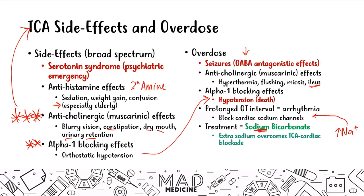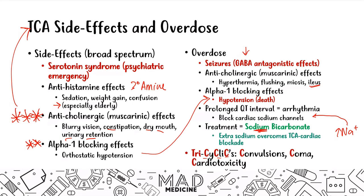An easy way to remember the TCA overdose presentation is with the three C's from the word 'tricyclic.' The three C's are: convulsions (seizures), coma (from hypotension), and cardiotoxicity (prolonged QT interval). Those are the main overdose presentations you need to know for step one.